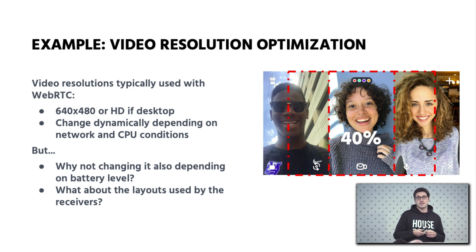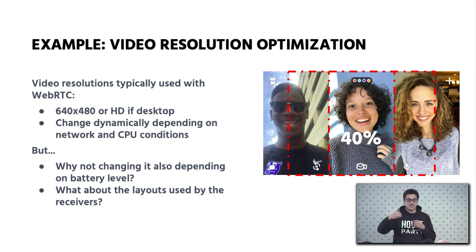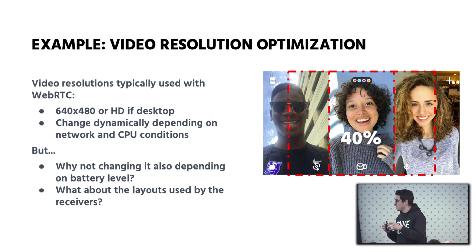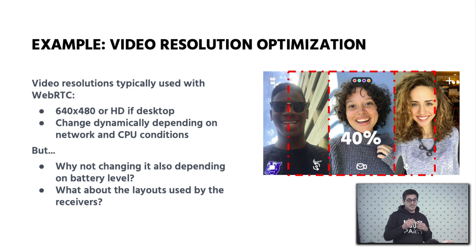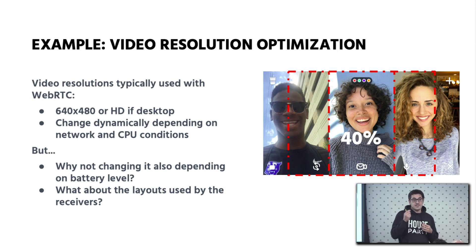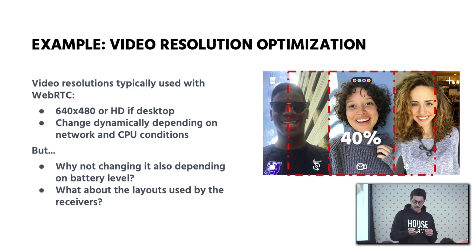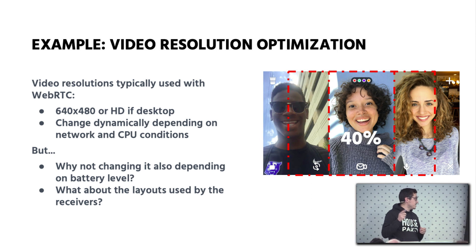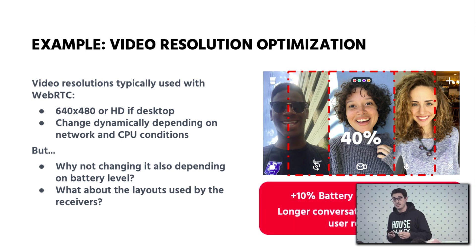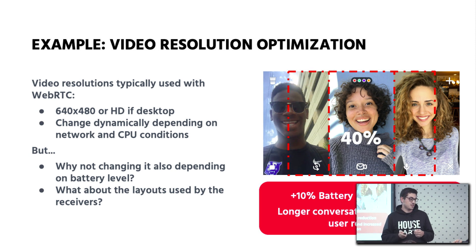So we decided to implement a new feature that we call the video resolution controller. It receives all the resolutions that the rest of the participants are willing to receive from you, aggregates them, and chooses the best resolution to send, so that all the pixels you are sending are rendered by at least one participant in the room — you don't send any pixel that nobody is going to see. We always do A/B testing, and we did this experiment and got more than 10% battery usage reduction, longer conversations, and better user retention.